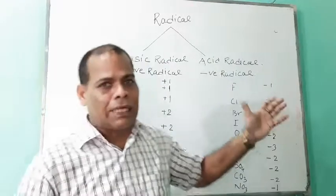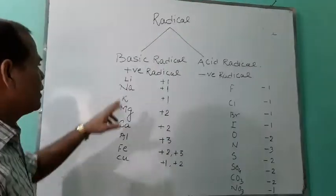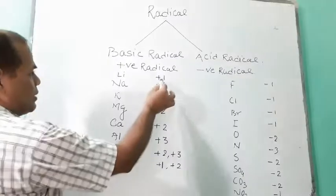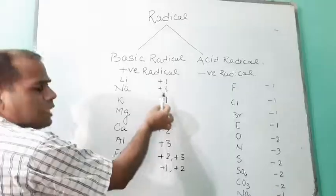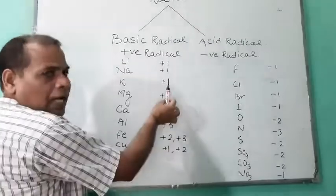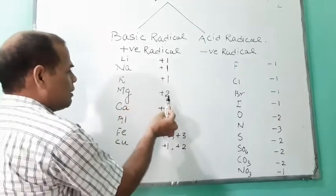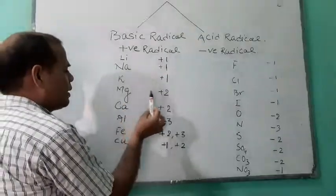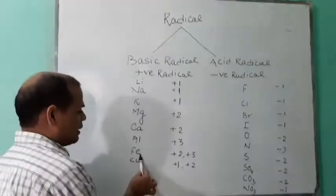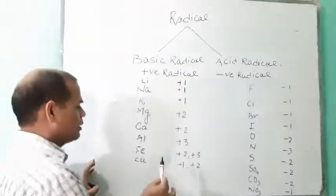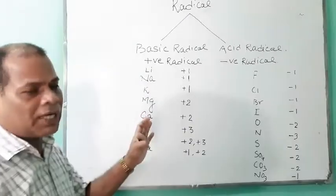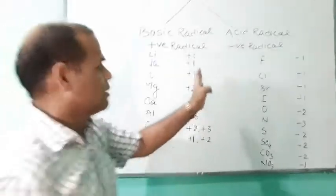A few examples of positive radicals: Lithium is a positive radical with one unit of electrical charge. Sodium is a positive radical with one unit of positive charge. Potassium has one unit of positive charge. Magnesium has two units of positive charge. Calcium has two units. Aluminium has three units. Iron has plus two and plus three. Copper has plus one and plus two. Many more exist, but these are a few.